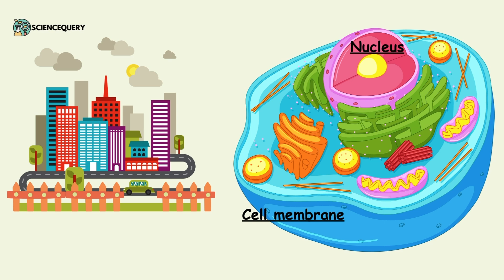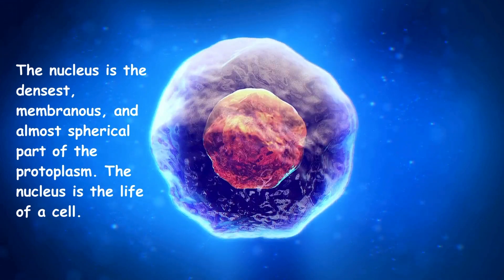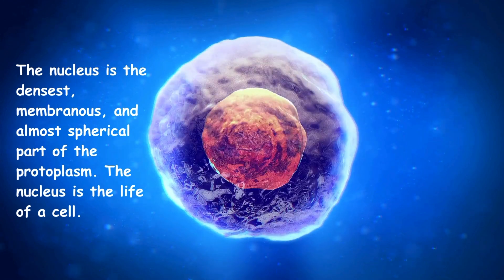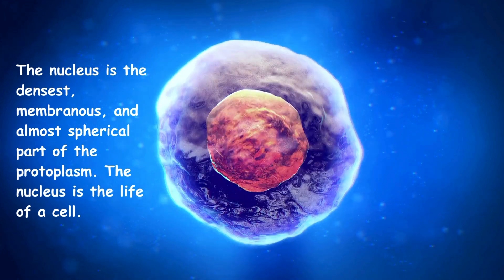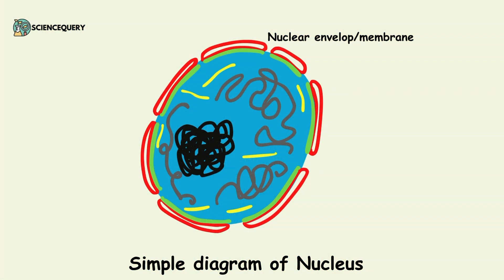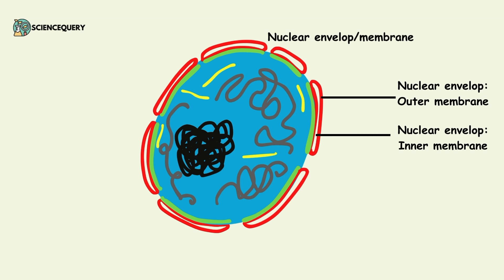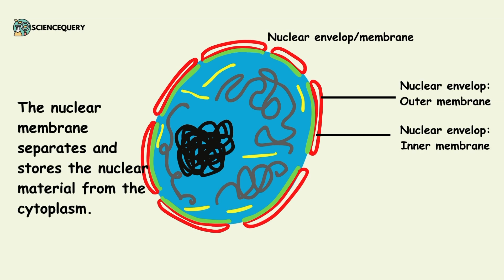The next important cell organelle is the nucleus. It can be compared with the city head office, with DNA as the city blueprint. The nucleus is the densest membranous and almost spherical part of the protoplasm — it is the life of a cell. The nucleus consists of a nuclear envelope or nuclear membrane, which is divided into an outer membrane and an inner membrane. The nuclear membrane separates and stores the nuclear material from the cytoplasm.